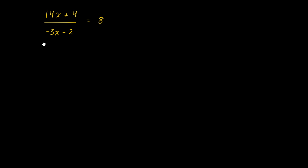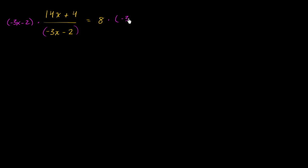The first thing I want to do is get rid of this (negative 3x minus 2) sitting in the denominator. So I want to multiply both sides of this equation times (negative 3x minus 2).